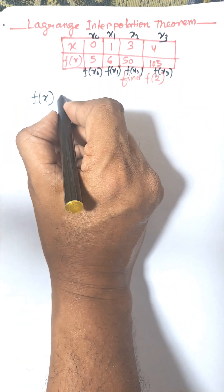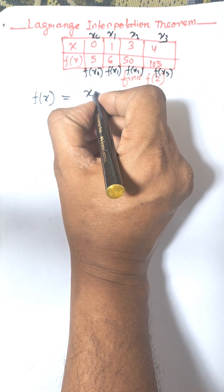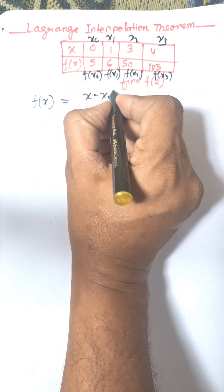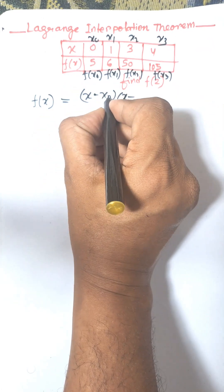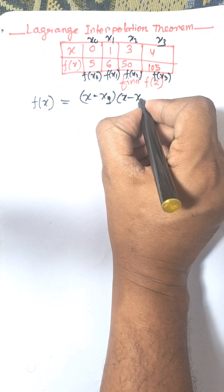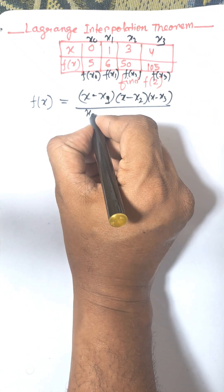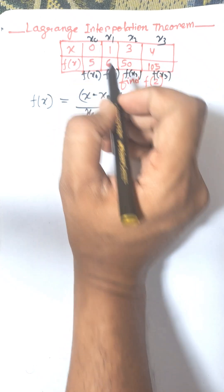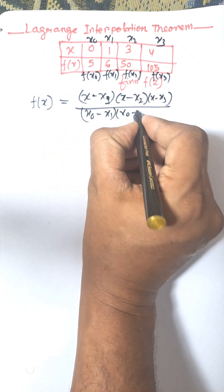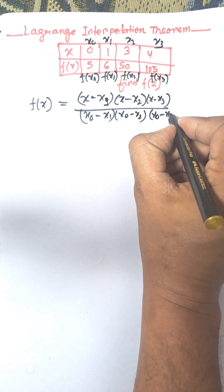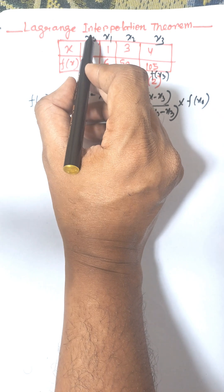The formula is: when you delete x0, consider x minus x1, x minus x2, x minus x3, divided by x0 minus x1, x0 minus x2, x0 minus x3, into f(x0). This is the first term when we remove x0.